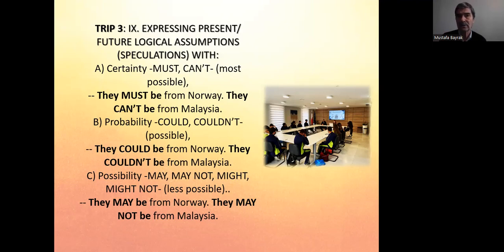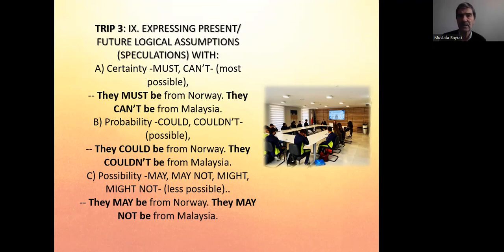For probability, we use 'could' and 'couldn't' — about 60-70% certainty. For example: 'They could be from Norway; they couldn't be from Malaysia.' For possibility, we use 'may,' 'may not,' 'might,' or 'might not' — about 20-30% certainty. For example: 'They may be from Norway; they may not be from Malaysia.'